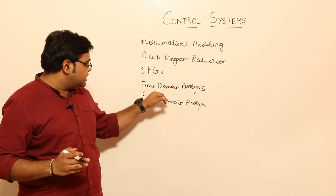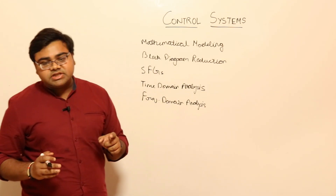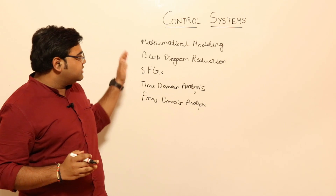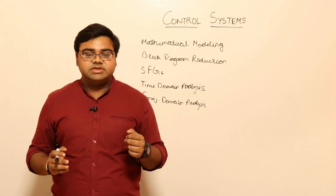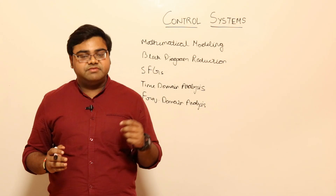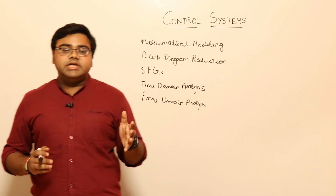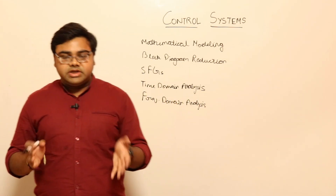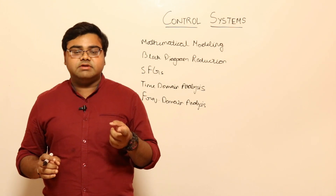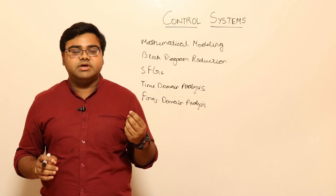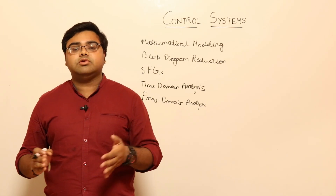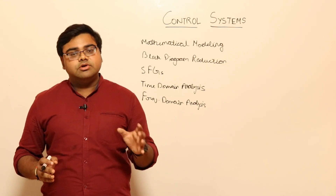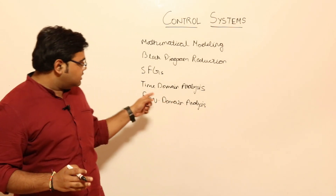Between time domain and frequency domain analysis there are some stability plots. The whole concept of control systems is essentially to check stability — specifically BIBO stability. In the time domain, there are two techniques: graphically using Root Locus plots, and without drawing any plots, using Routh-Hurwitz Criteria to determine if a characteristic equation is stable or unstable just by examining the polynomial.